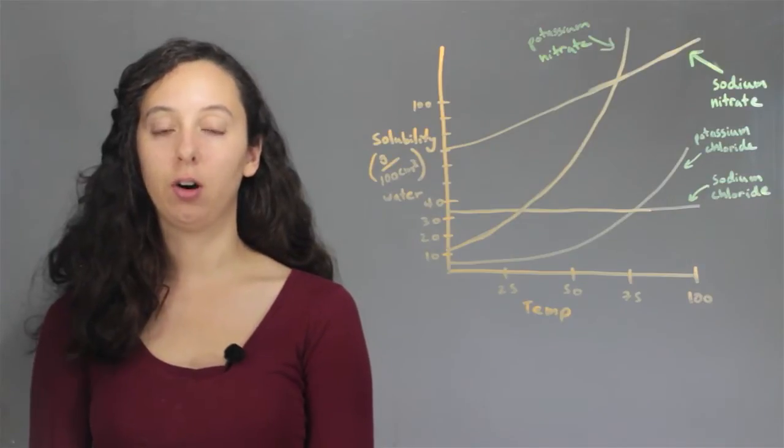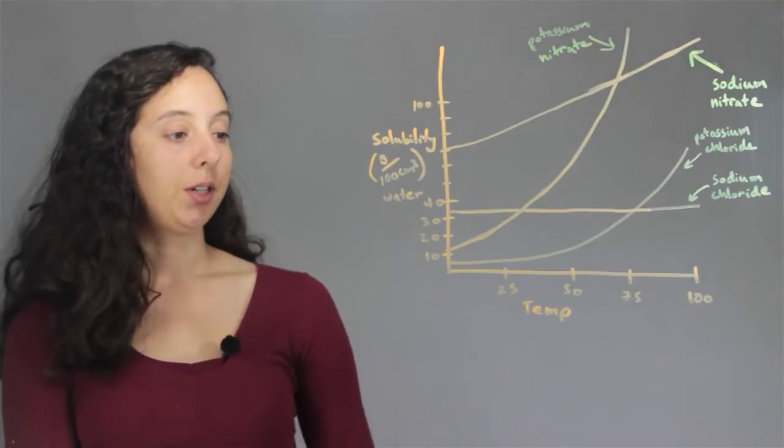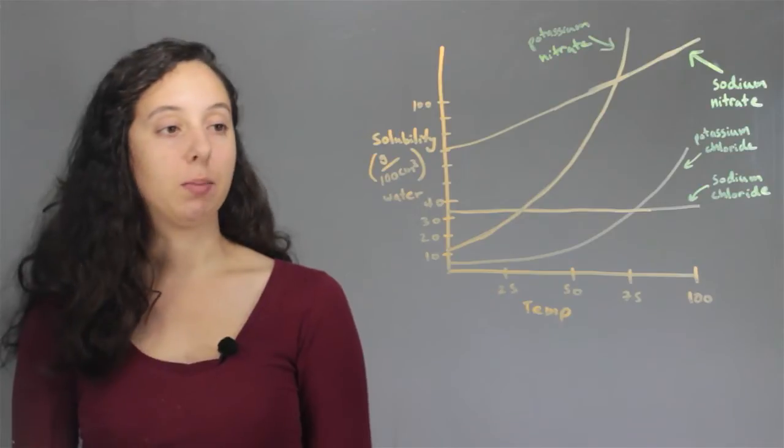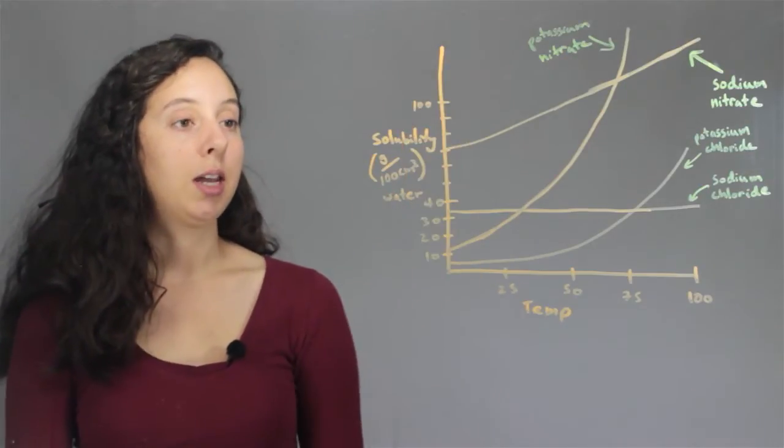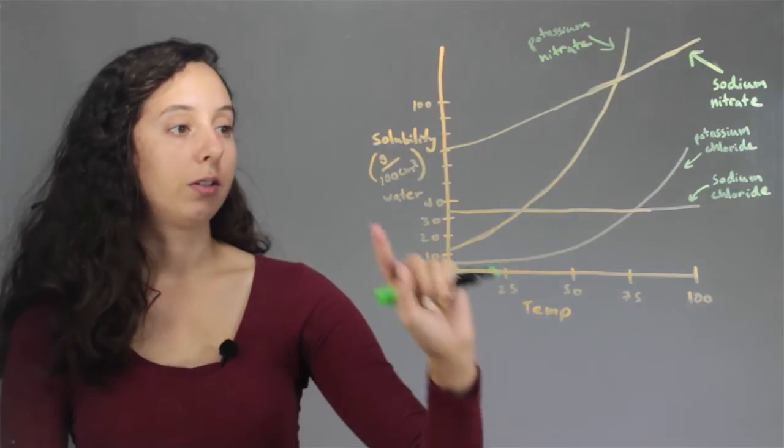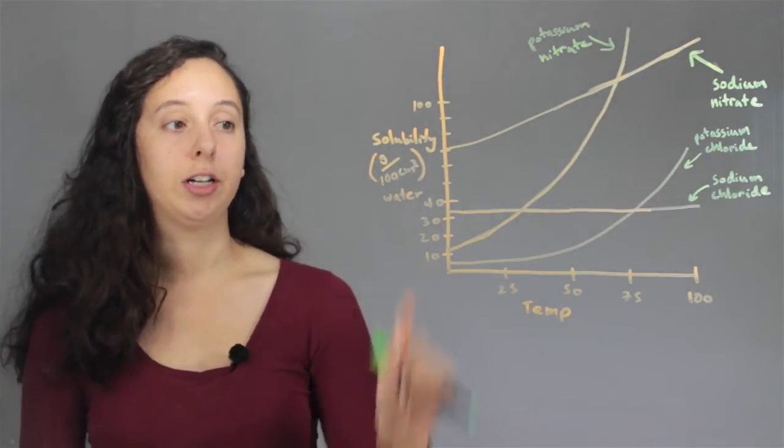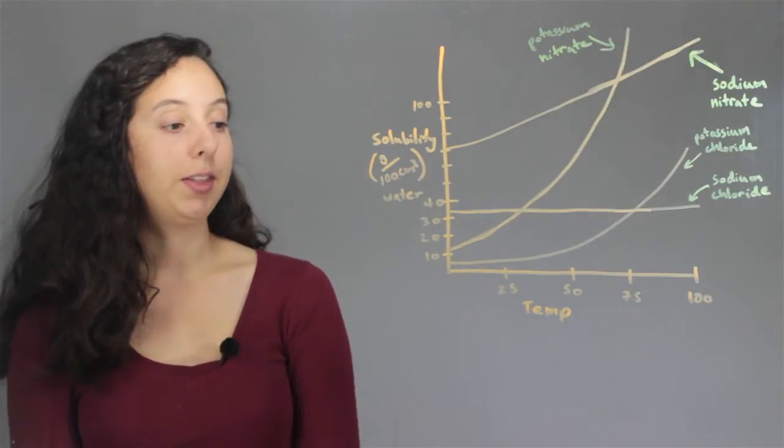Alright, so most solubility graphs we're going to see have these two axes, temperature and solubility. This one happens to be in water. So these little numbers here mean how many grams of our solid are going to go into a hundred centimeters cubed or milliliters of water. And this is temperature.